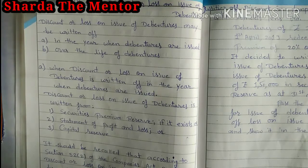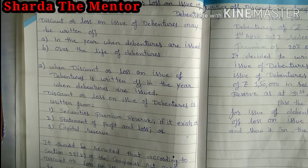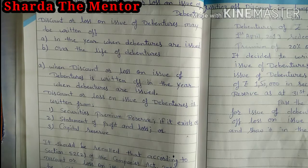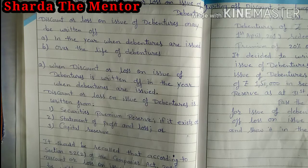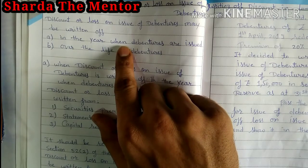Here is the new topic: writing off discount or loss on issue of debentures. The type of question we have seen in the previous video. The treatment we generally consider is that discount or loss on issue of debentures may be written off — it is considered a capital loss and should be written off before redemption starts. There are two methods to write off discount or loss on issue of debentures. The first method is in the year when debentures are issued — you can write off the loss in a lump sum in the same year.